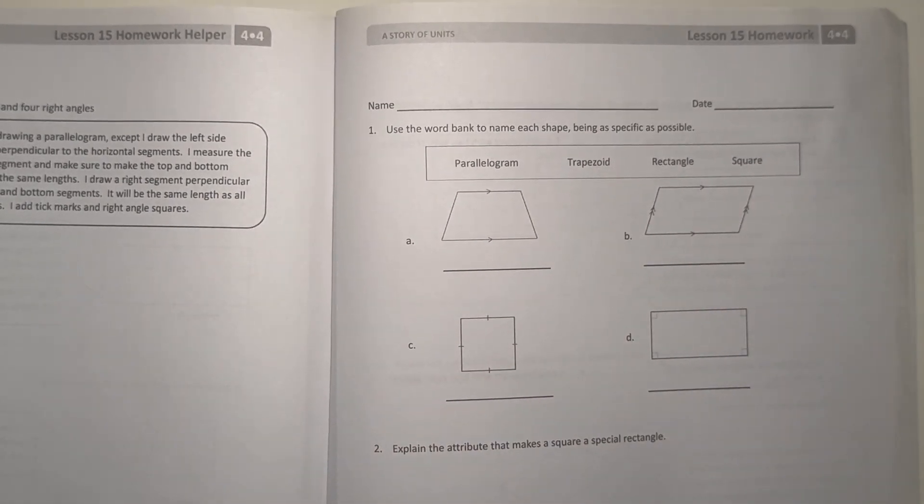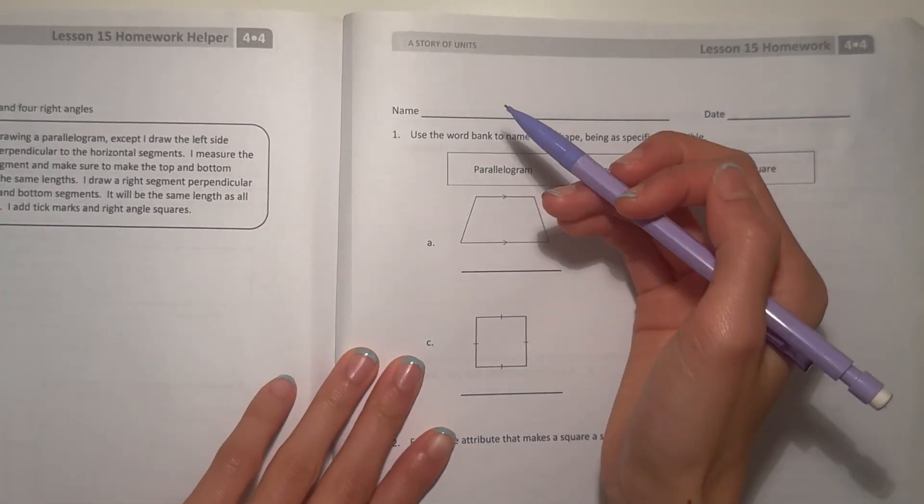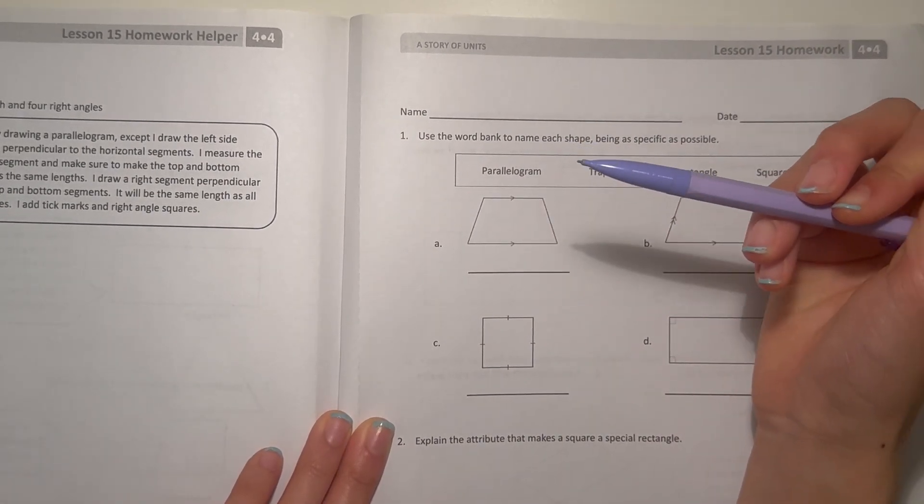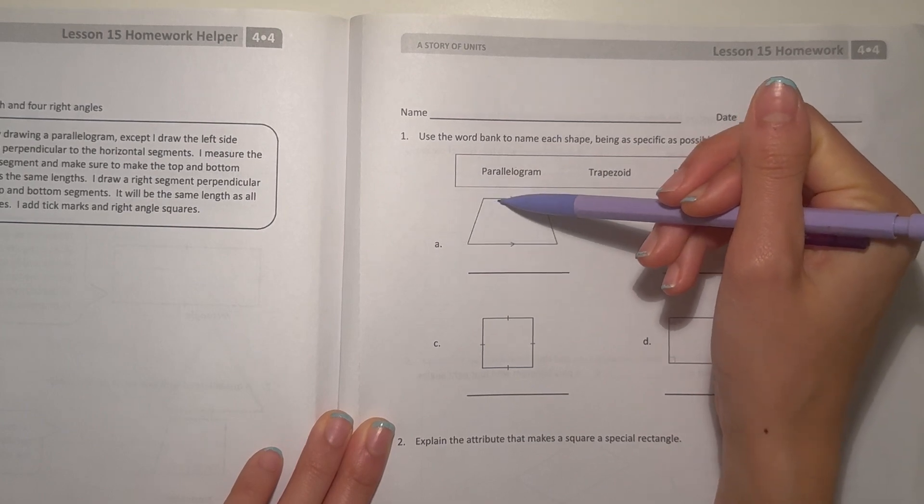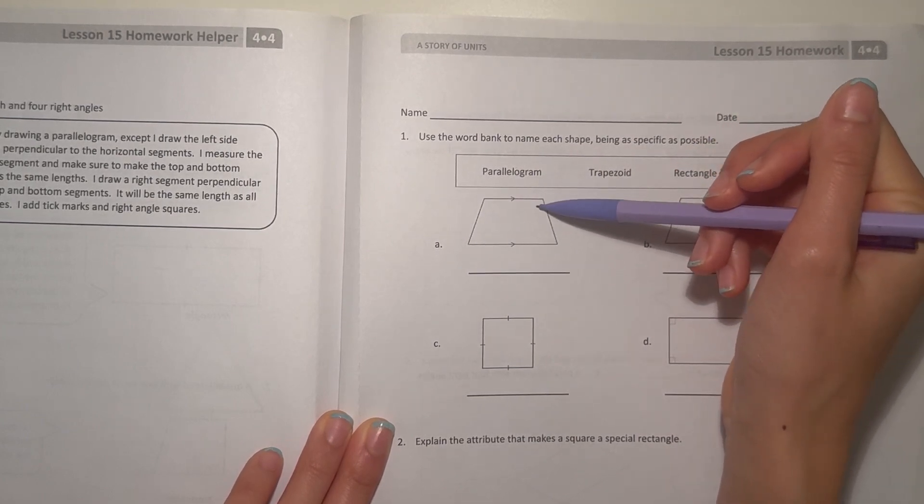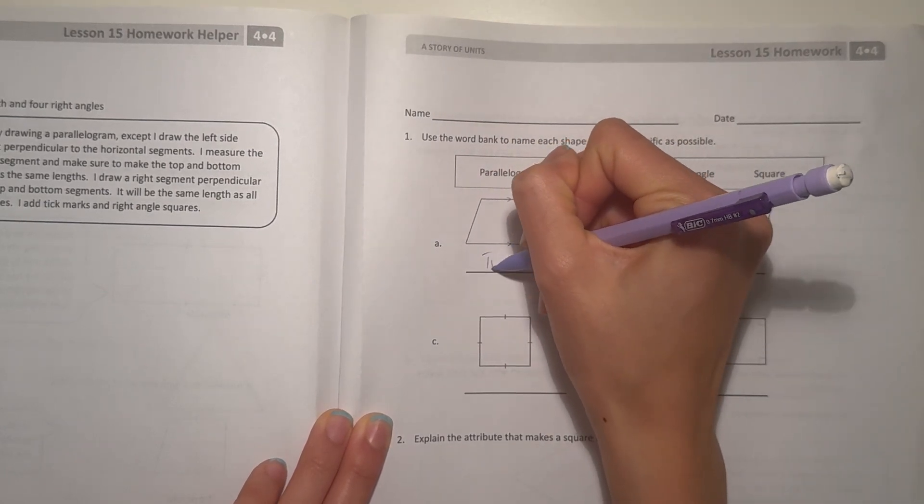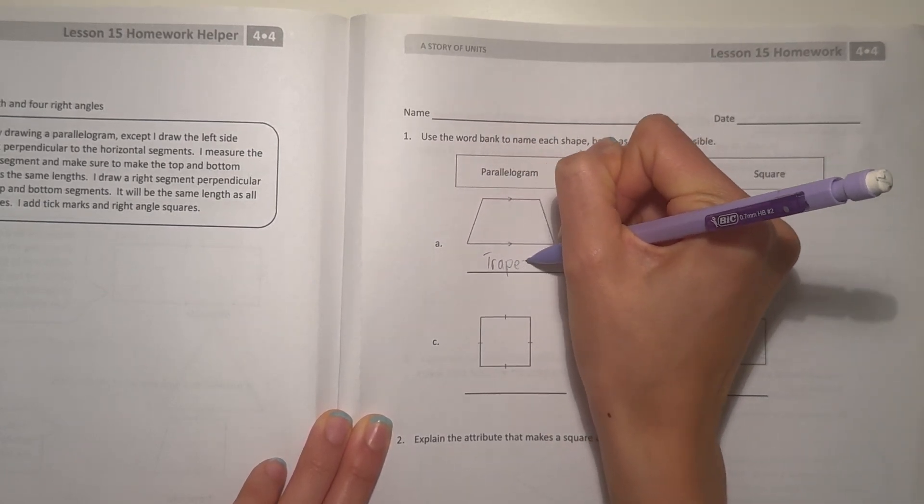Number one, use the word bank to name each shape, being as specific as possible. Alright, A, this shape would actually be a trapezoid. This would be a trapezoid because it has one set of parallel sides and it has four sides. So, trapezoid.